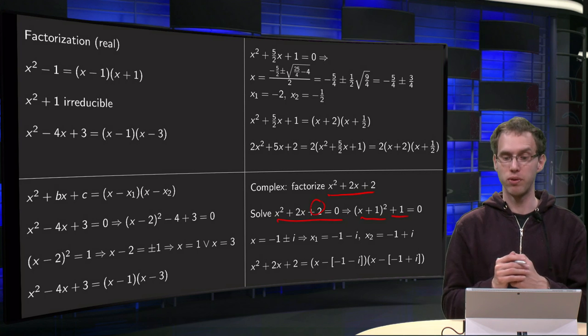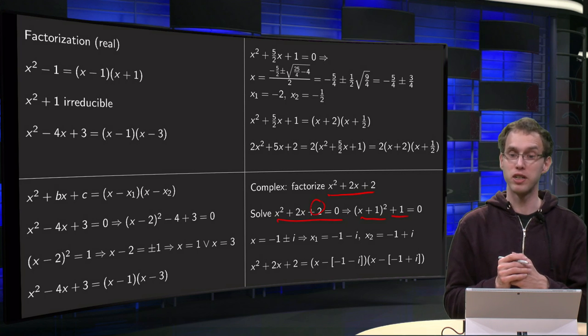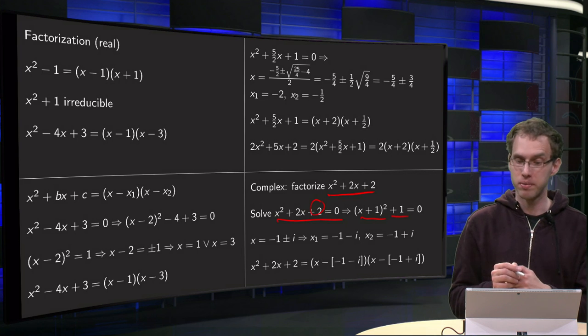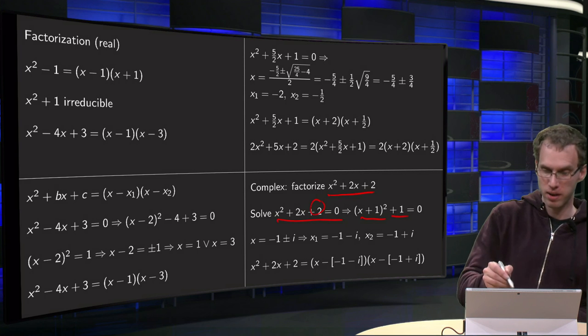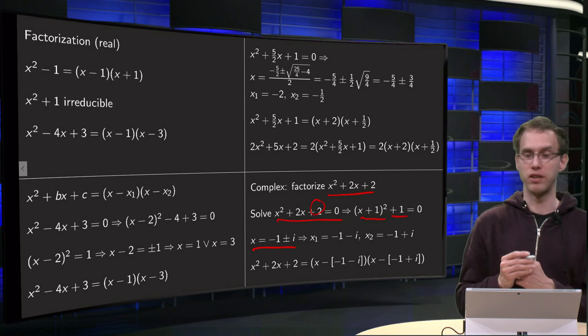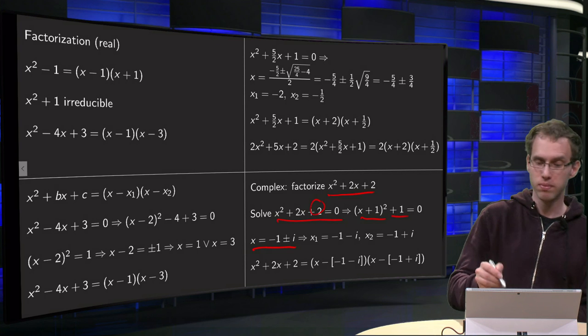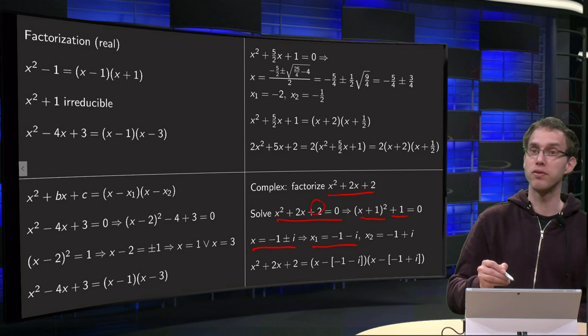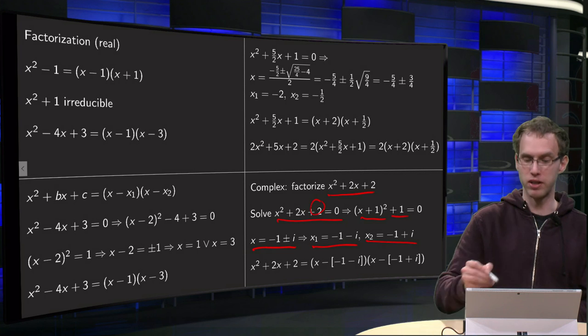Bring the +1 to the other side, so we have (x + 1)² = -1, so x + 1 = ±i, or x = -1 ± i. So first zero -1 - i, and second zero -1 + i.